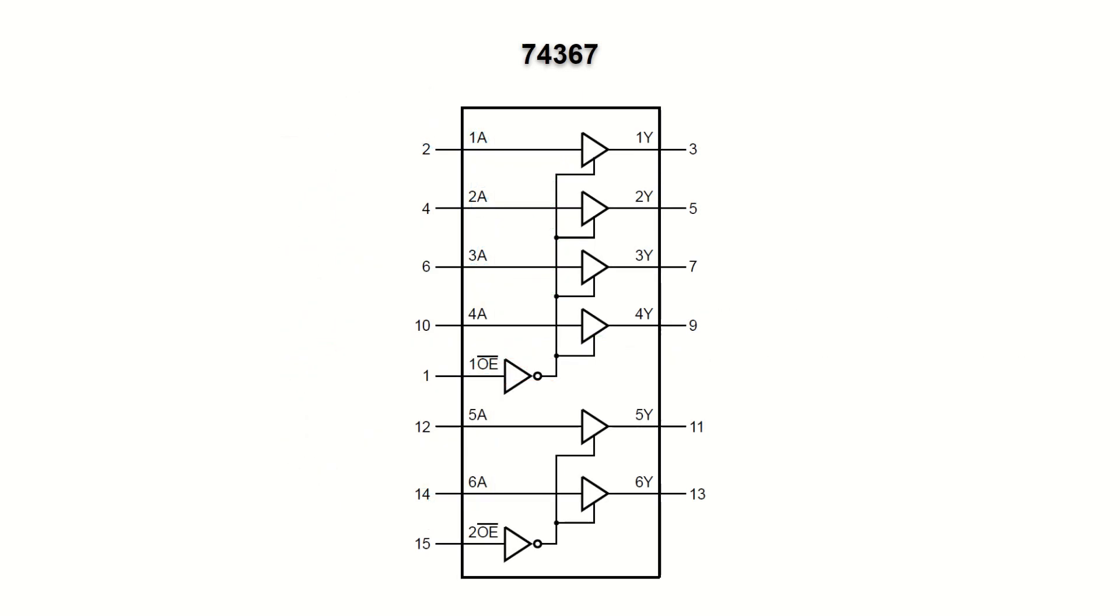It contains six buffers, but it also has two additional inputs. One of them controls outputs of four of the buffers, the second one switches the remaining two outputs.